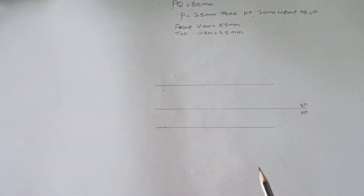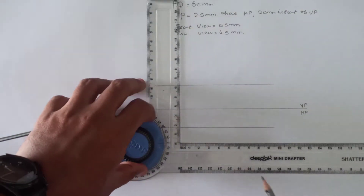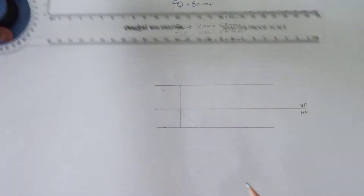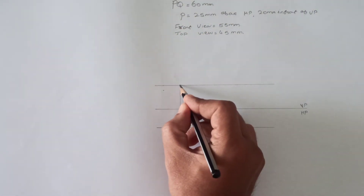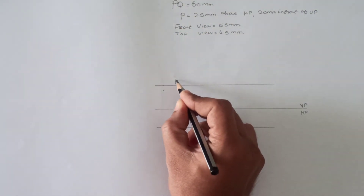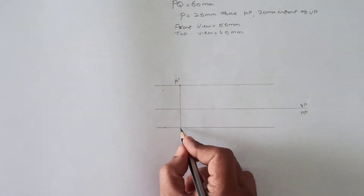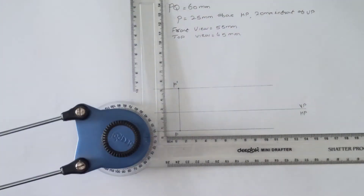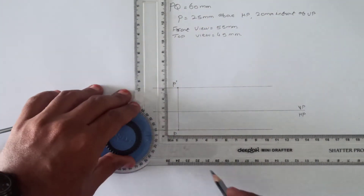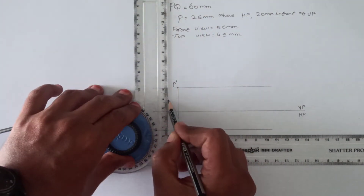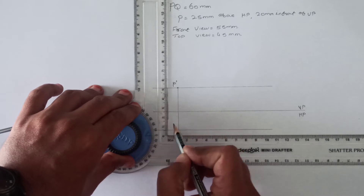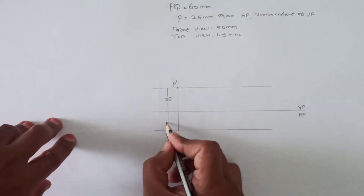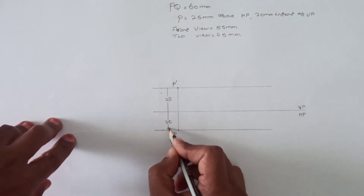From the 20 mm and 25 mm points, draw a line parallel to the reference line. Since we have considered point P, the 25 mm point should be marked as P' and the 20 mm point should be marked as P. Here, P' will be the front view and P will be the top view.